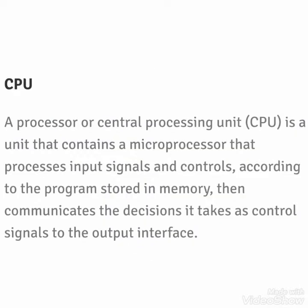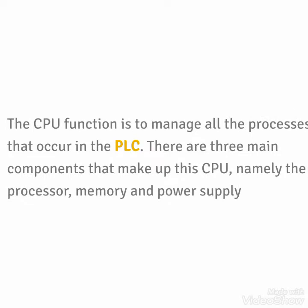The CPU, or central processing unit, is a unit that contains a microprocessor that processes input signals and controls according to the program stored in memory, then communicates the decisions it takes as control signals to the output interface. The processor takes input, processes it as per our program, and then gives the output. The CPU function is to manage all the processes that occur in the PLC. There are three main components that make up the CPU: the processor, memory, and the power supply.